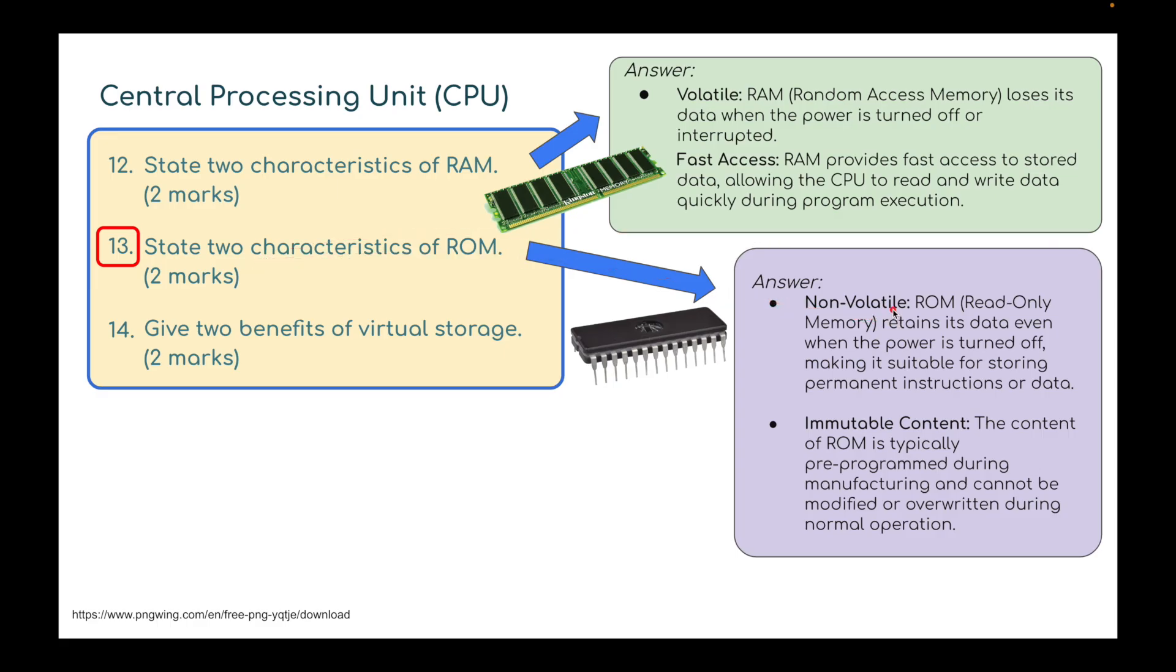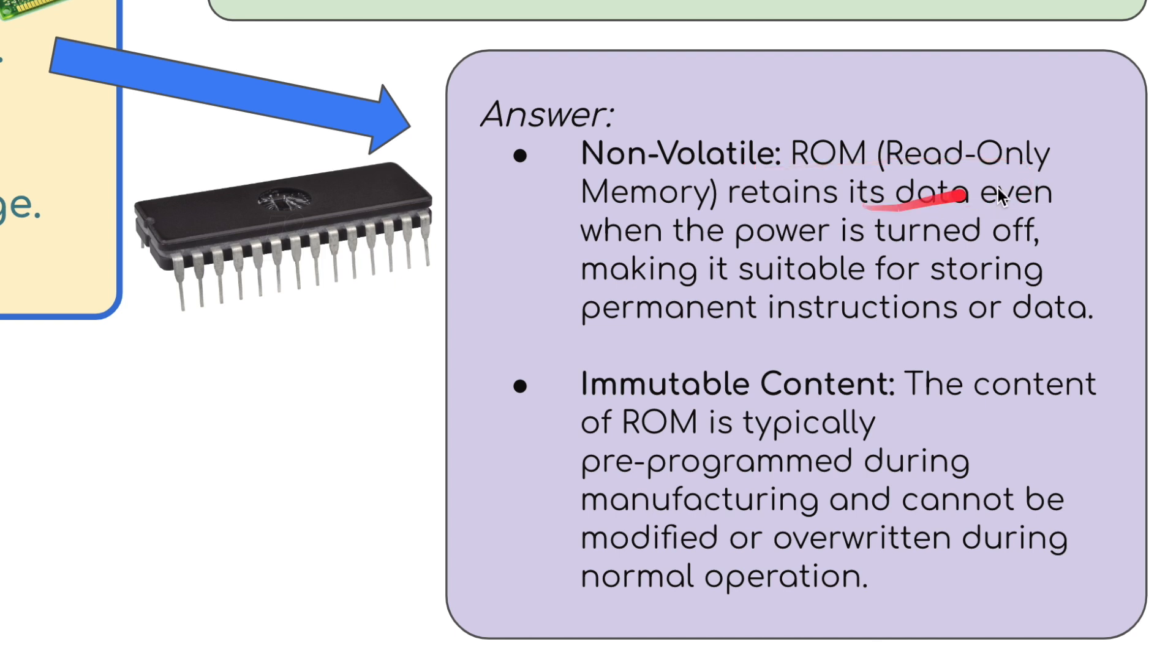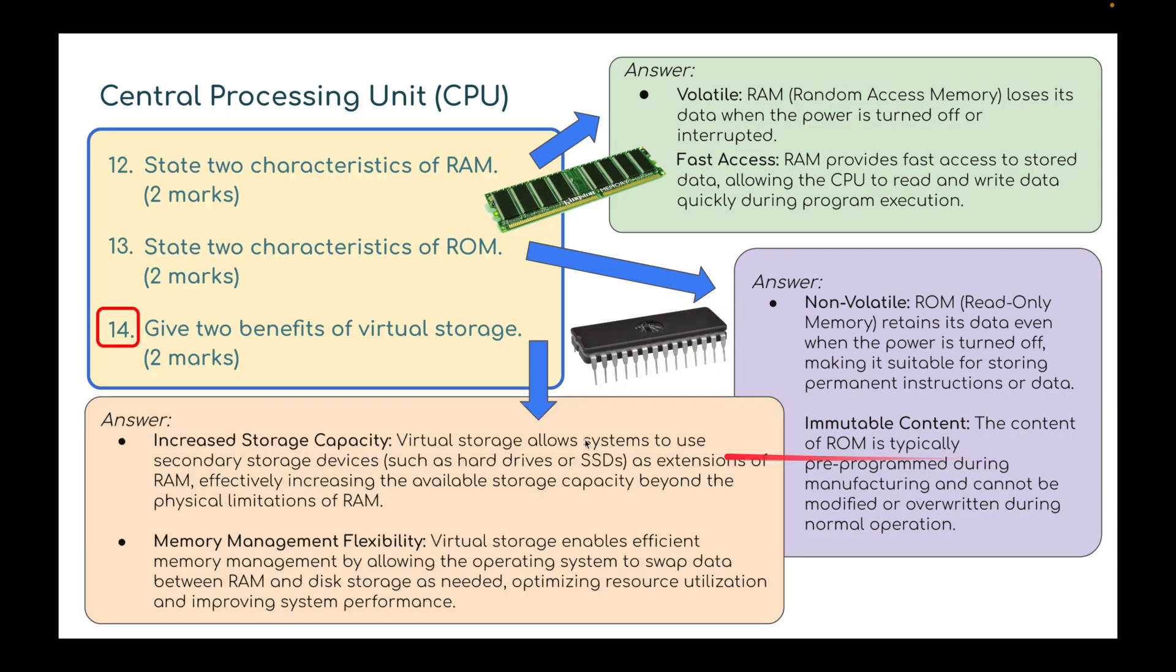State two characteristics of ROM. ROM is non-volatile memory - it's read-only memory that retains its data even when the power is turned off, making it suitable for storing permanent instructions or data. Immutable content: the content of ROM is typically pre-programmed during manufacturing and cannot be modified or overwritten during normal operations. It contains the BIOS of the computer - how the hardware has been set up and how the different components talk to each other.